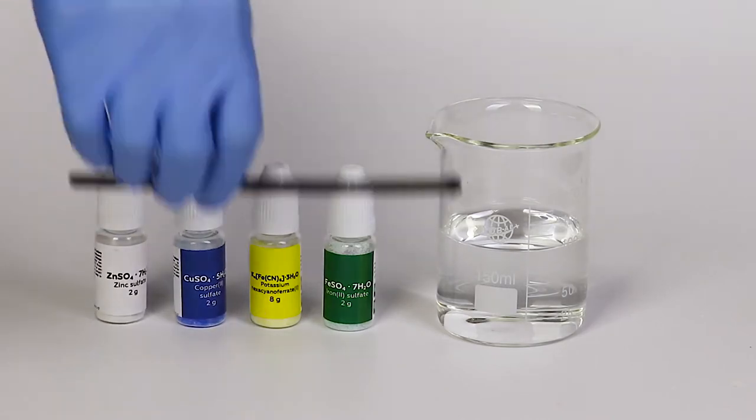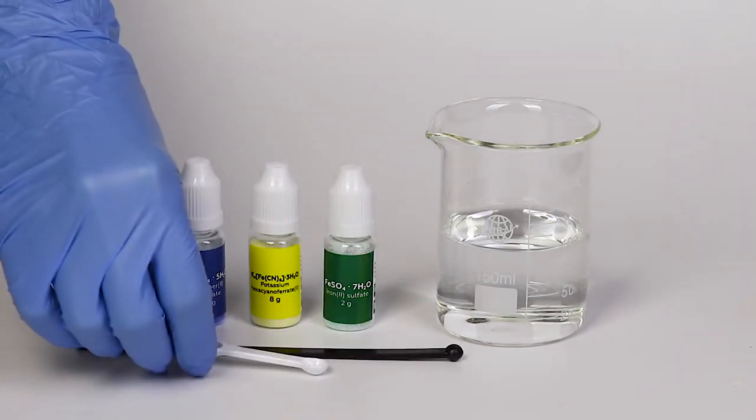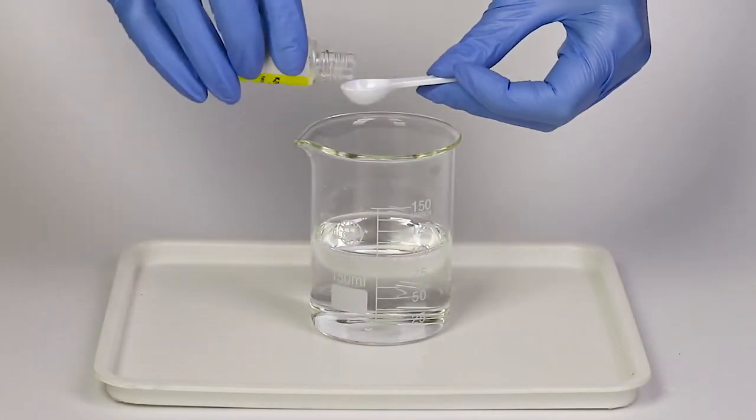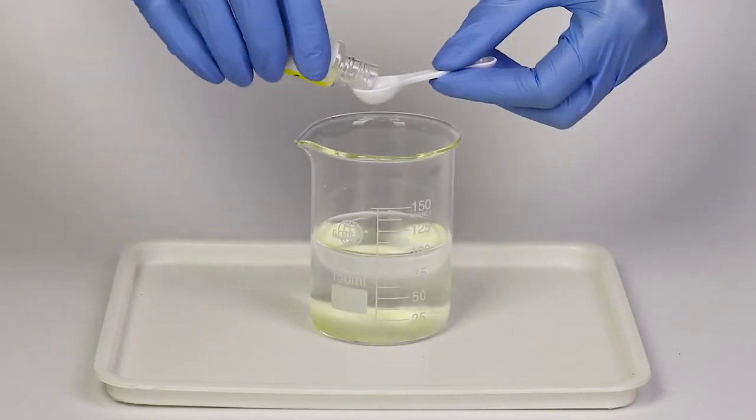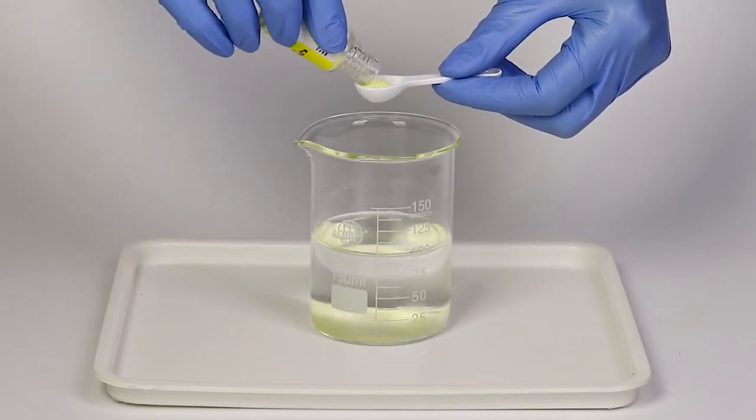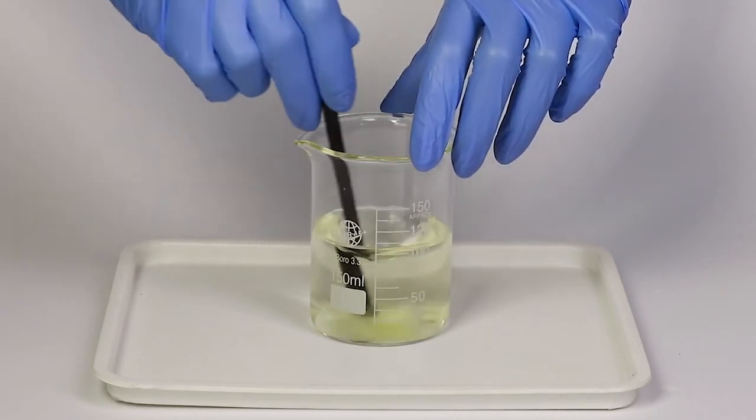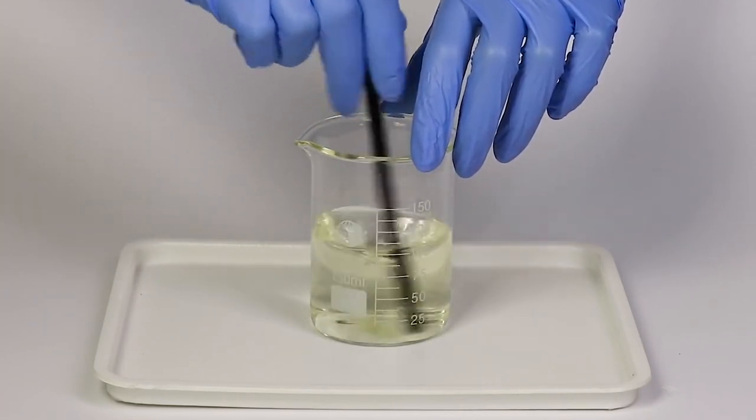You will also need a plastic stirring rod and a measuring spoon. In a beaker with water, add two big spoonfuls of potassium ferrocyanide and stir the mixture with the stirring rod until the potassium ferrocyanide is dissolved.